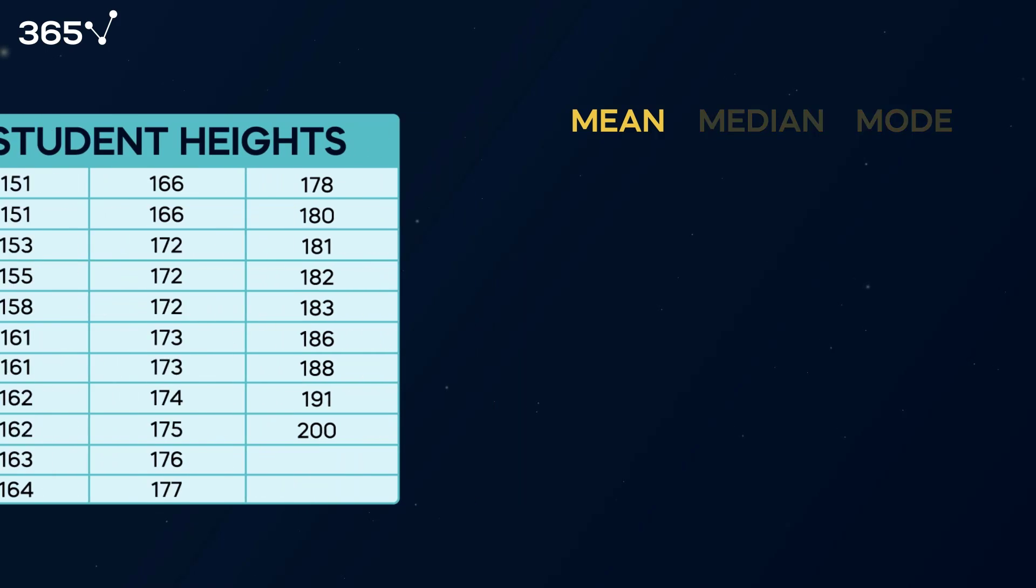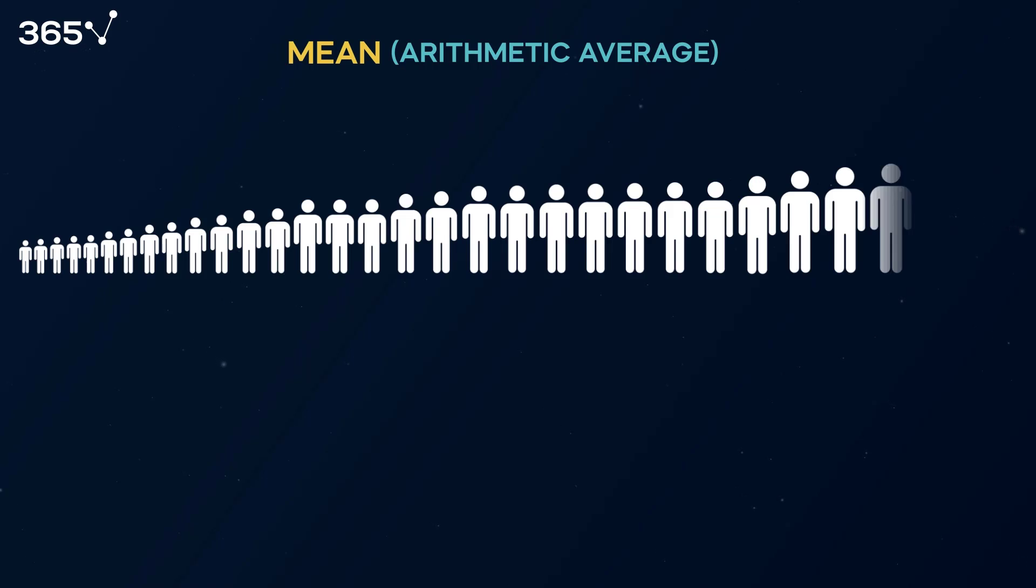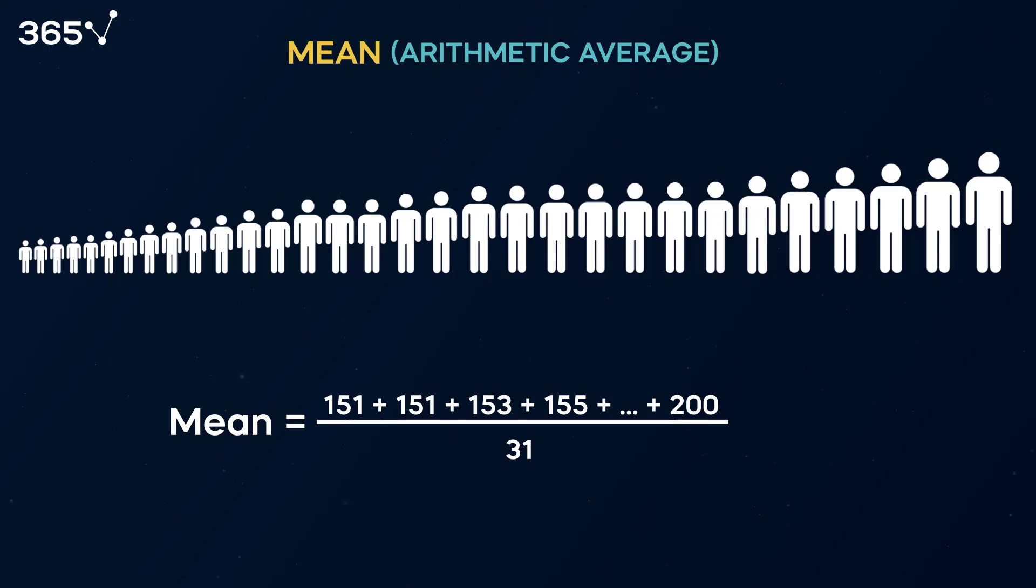Let's compute the mean, more frequently called arithmetic average, which equals the sum of all heights divided by 31, the number of students in our sample, and the average height of an individual. We obtain 171.2 centimeters.